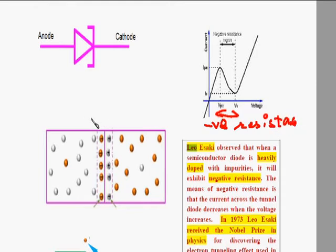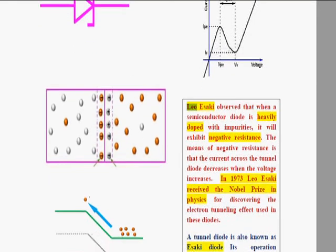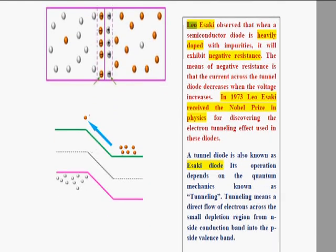In P-type there are holes and in N-type there are electrons. In the junction, there are no majority carriers — only ions. In the P-type side there are negative ions; in the N-type there are positive ions. For a normal diode, the doping ratio is 1 to 10 raised to the power 8, meaning in 10^8 atoms there is one impurity atom.